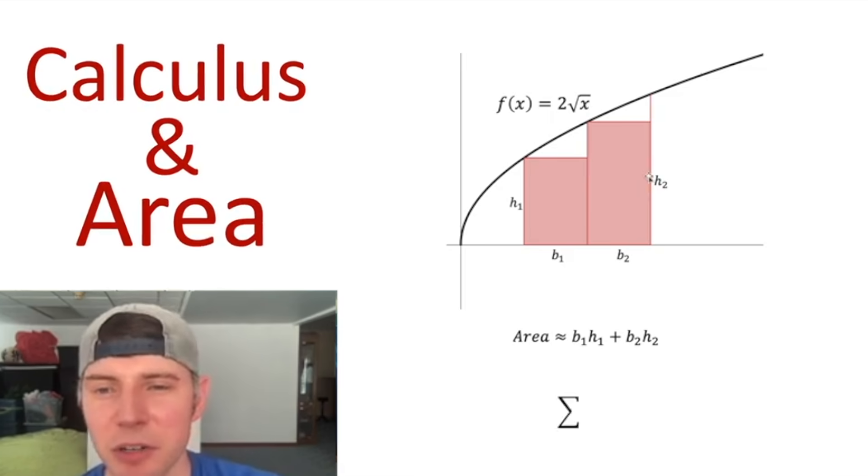And we can write this in sigma notation as B_I H_I. That way the I can change from one to two. We'll start at I equals one, and we stop at I equals two. These are two ways to say the same thing.